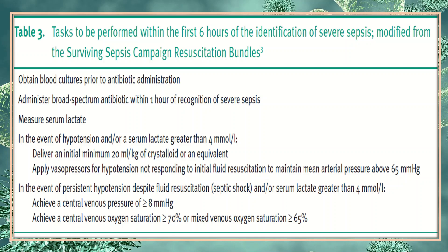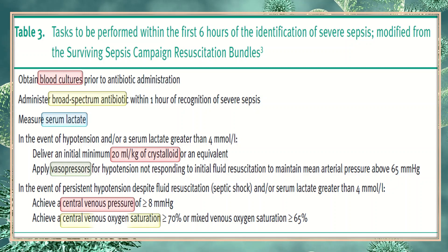Tasks to be performed within the first six hours of identification of severe sepsis (modified from the Surviving Sepsis Campaign resuscitation bundle) include: obtain blood cultures prior to antibiotic administration; administer broad-spectrum antibiotics within one hour of recognition of severe sepsis; measure serum lactate; and in the event of hypotension or serum lactate greater than 4 mmol/L, deliver an initial minimum of 20 ml/kg of crystalloid. Apply vasopressors for hypotension not responding to fluid resuscitation to maintain a mean arterial pressure of 65 mmHg. Achieve a central venous pressure of more than 8 mmHg and central venous oxygen saturation of more than 70%, or mixed venous oxygen saturation of more than 65%.